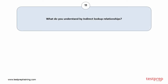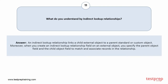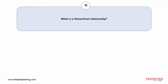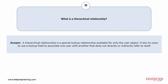Question number eleven: what do you understand by indirect look-up relationships? An indirect look-up relationship links a child external object to a parent standard or custom object. Moreover, when you create an indirect look-up relationship field on an external object, you specify the parent object field and the child object field to match and associate records in the relationship. Question number twelve: what is a hierarchical relationship? A hierarchical relationship is a special look-up relationship available for only the user object. It lets users use a look-up field to associate one user with another that does not directly or indirectly refer to itself.